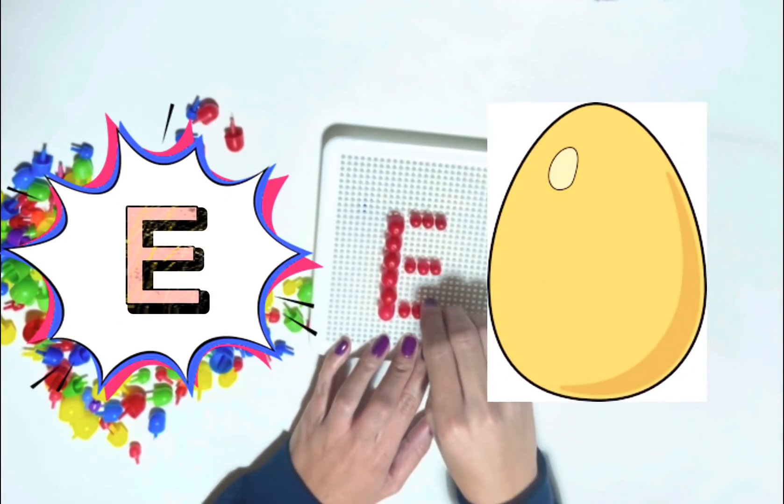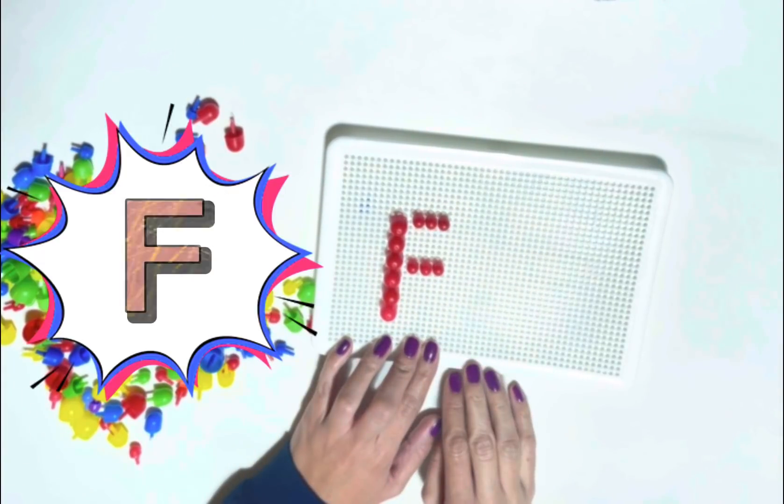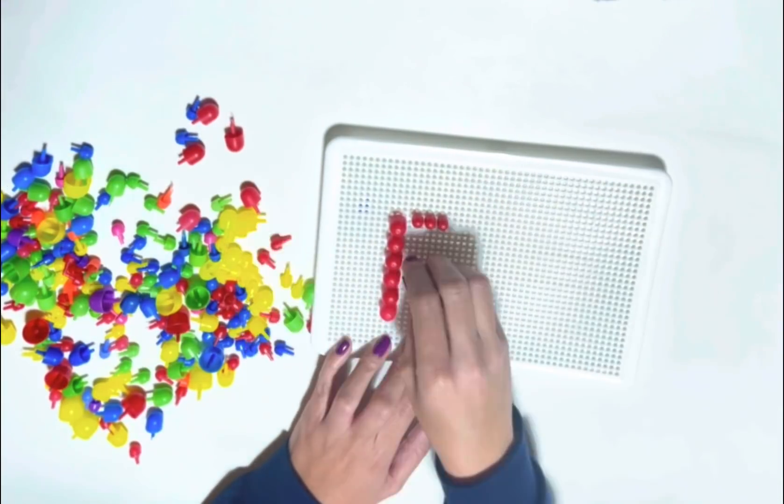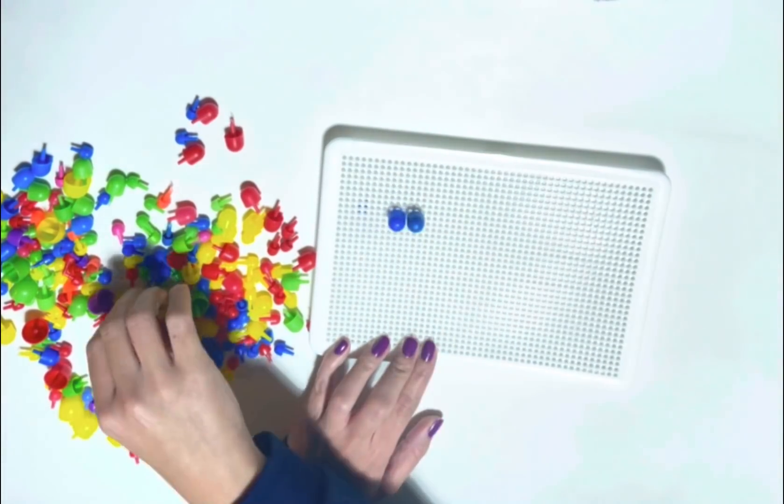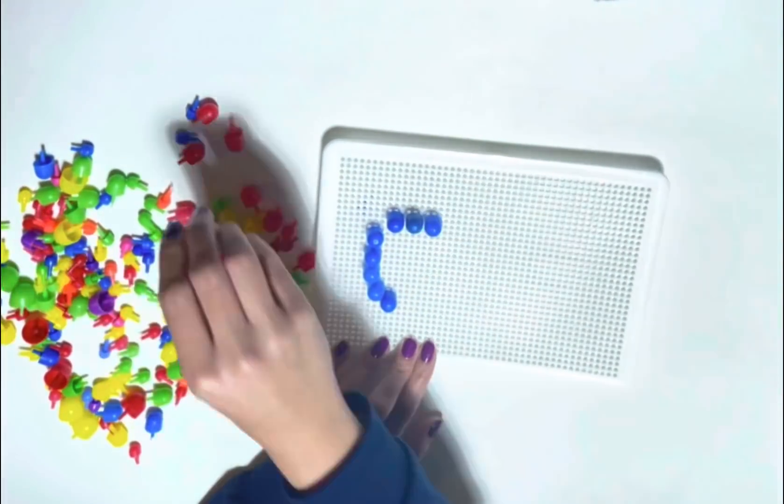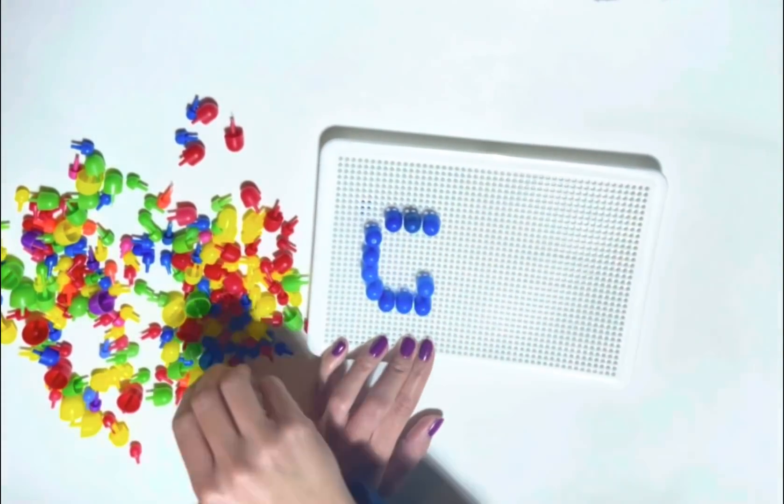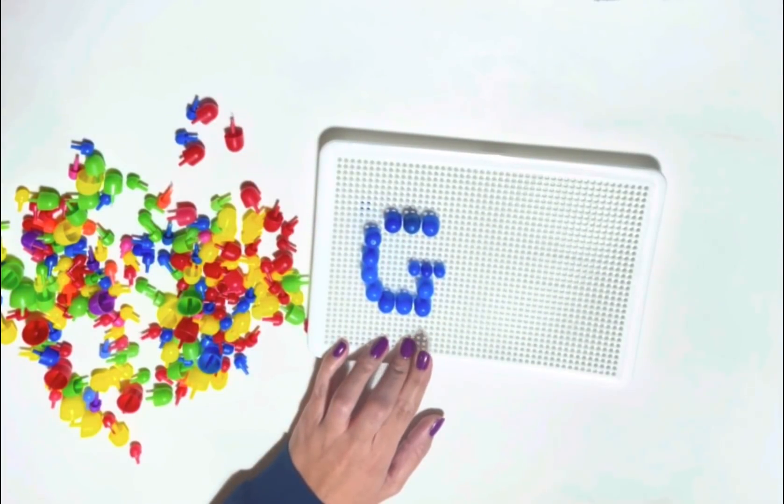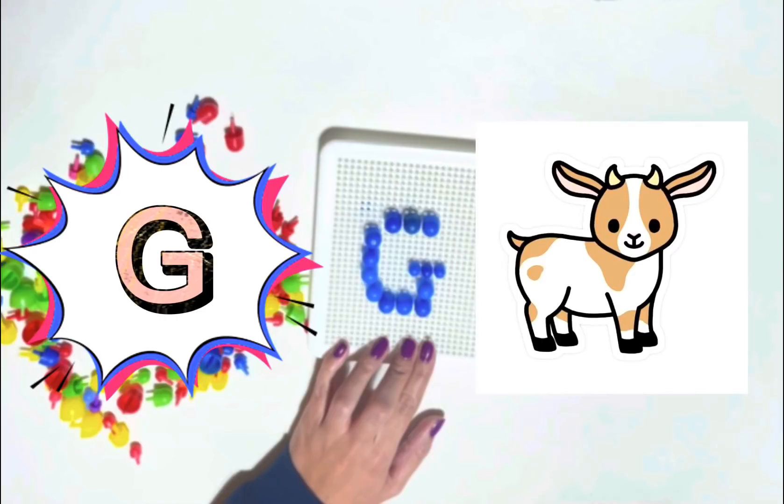E is for Egg. F is for Fish. G is for Goat.